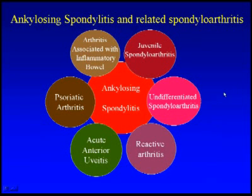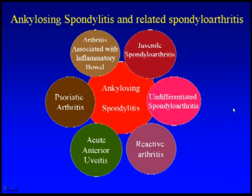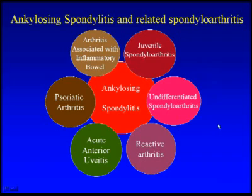Ankylosing spondylitis is an illness that actually belongs to a family of illnesses that overlap with each other. As you can see in this slide, there are probably six different individual manifestations, or if you want to call them separate illnesses, that overlap with ankylosing spondylitis. I would like to call them as a family of illnesses — a better term: spondyloarthritis.